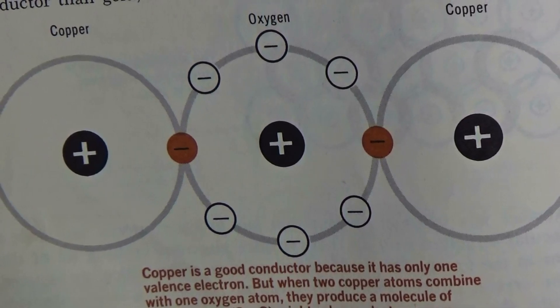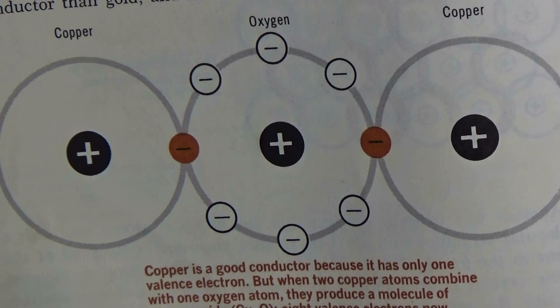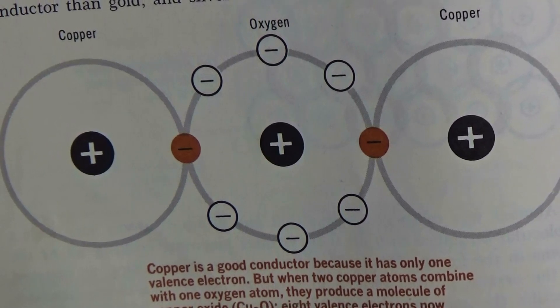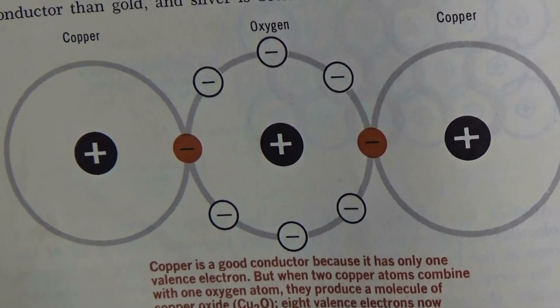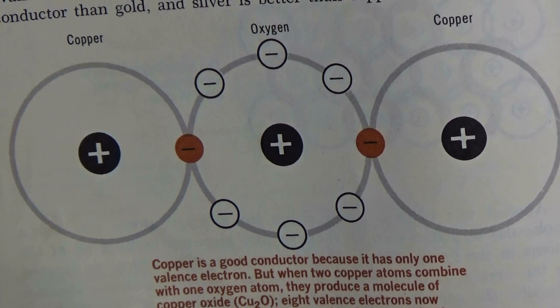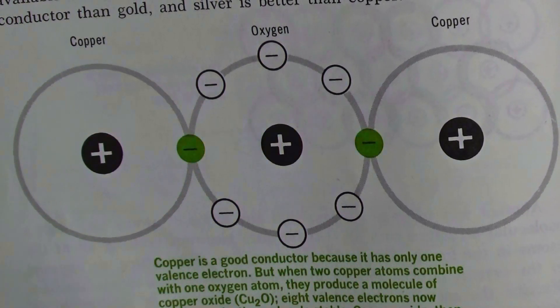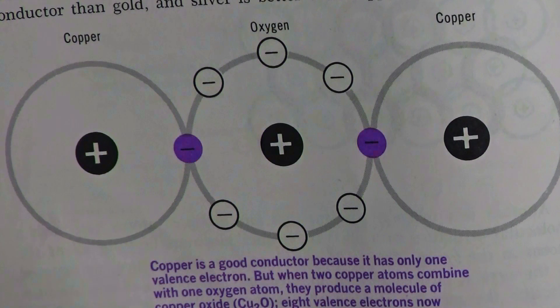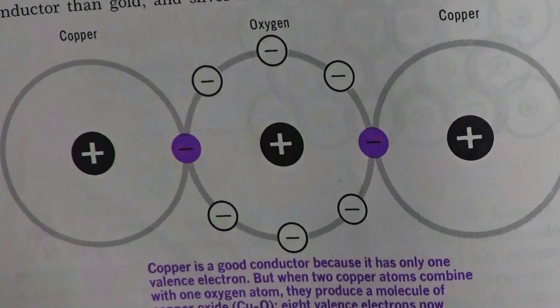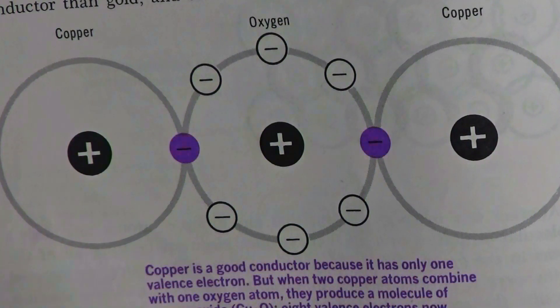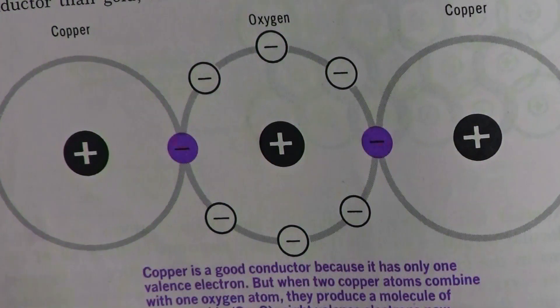A good example for this is that of copper and oxygen. Copper has one valence electron, and oxygen needs two electrons for a full shell. Copper atoms will share their valence electrons with the oxygen nucleus, achieving stability and forming a copper oxide molecule. Copper oxide in its pure form is a near-perfect insulator.